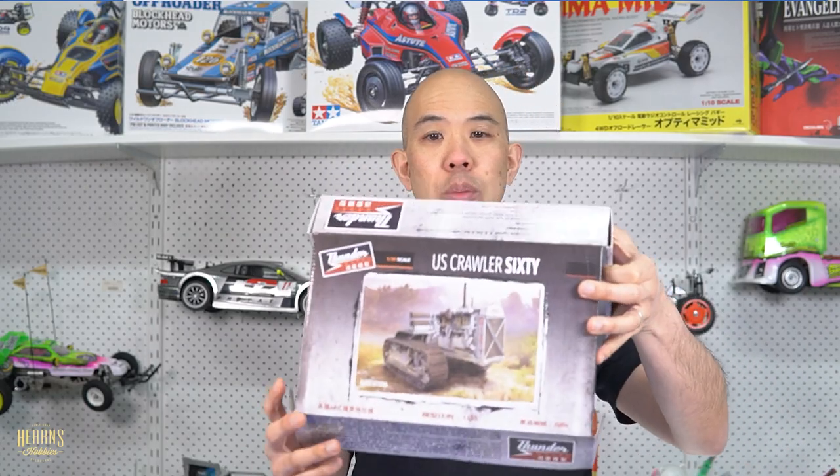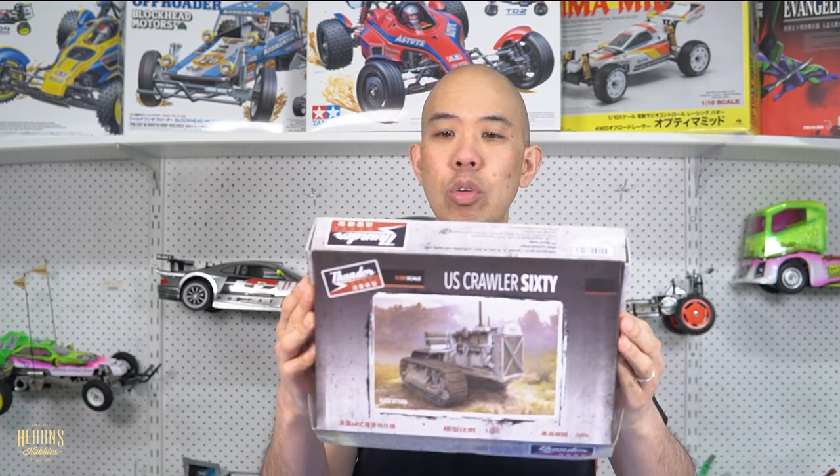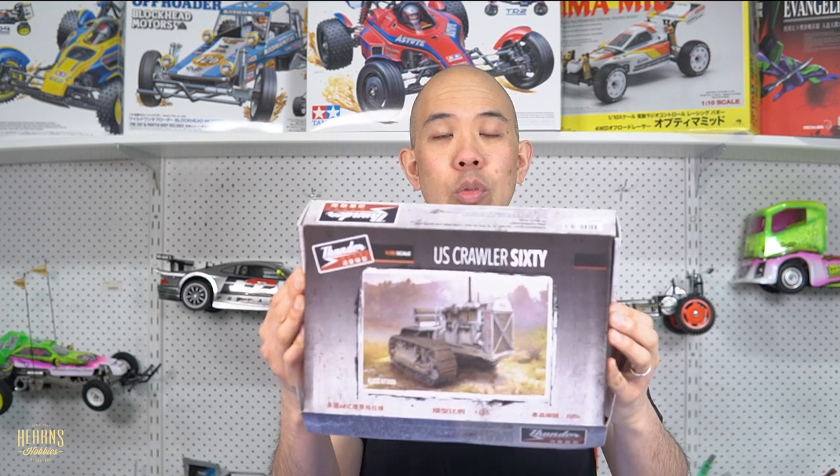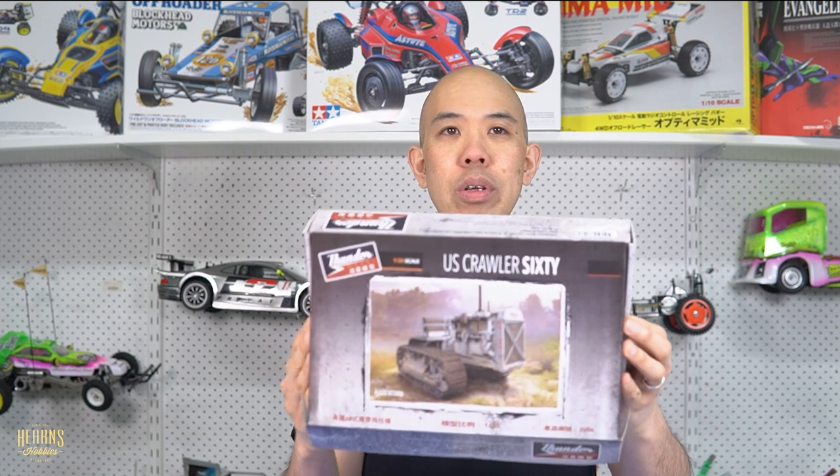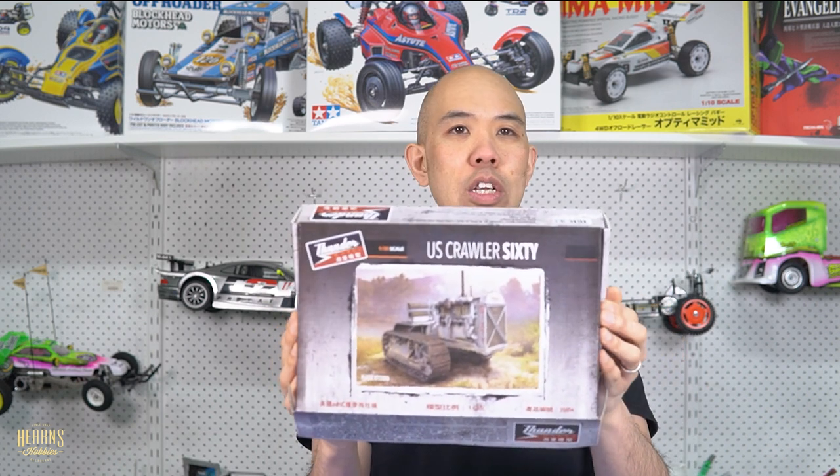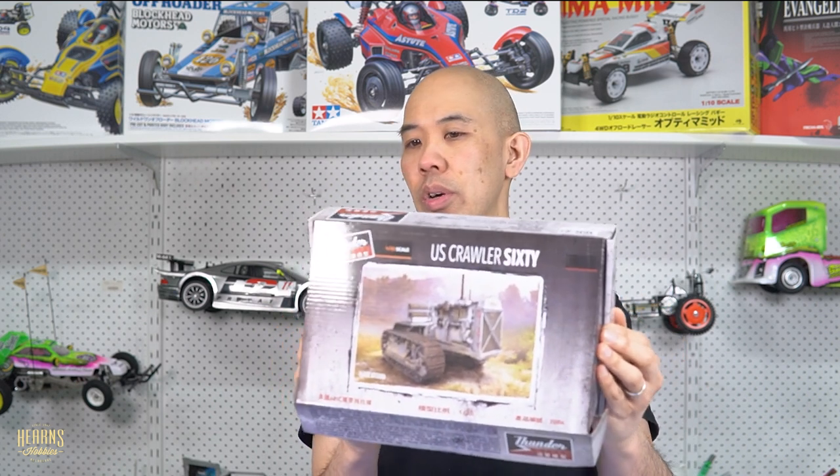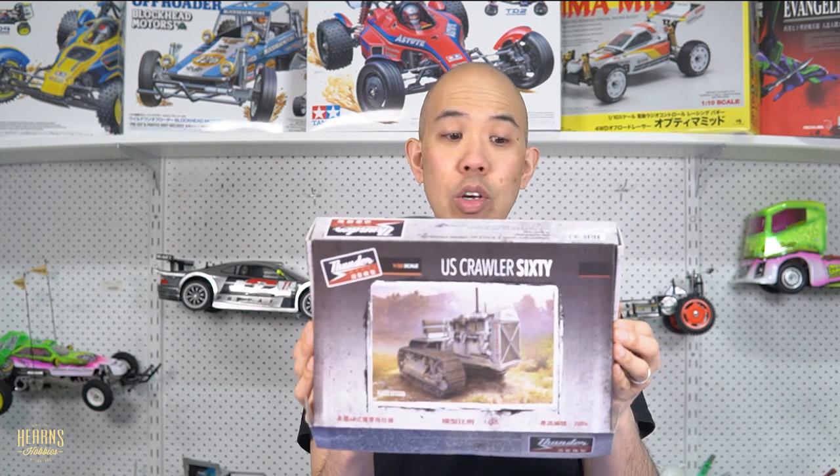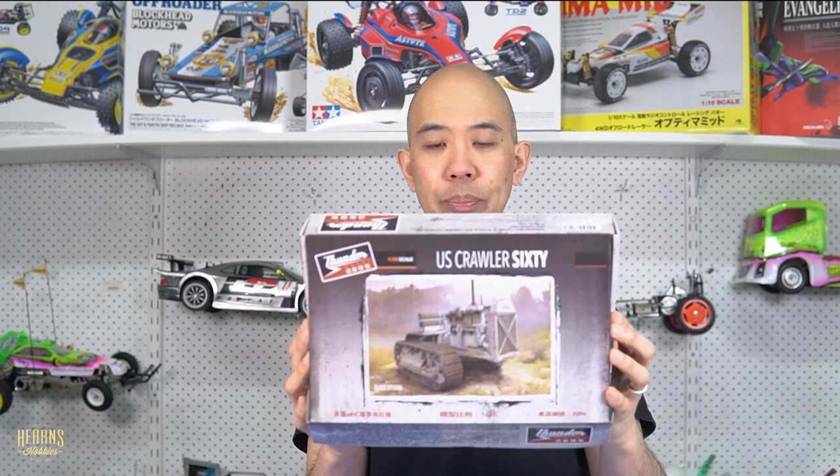You've got your tow hook here. So that is my open box review of the Thunder model US60 or US Crawler 60, which is a Caterpillar 60 tractor. Very nice. Something interesting and doesn't have any guns on it. So nice and complicated build too. If you like building stuff, good choice.